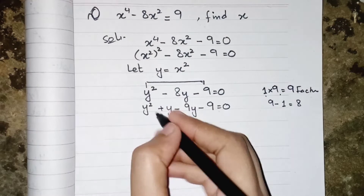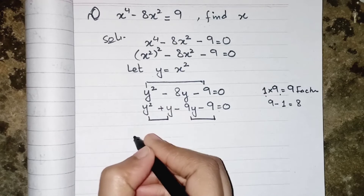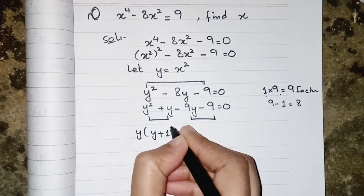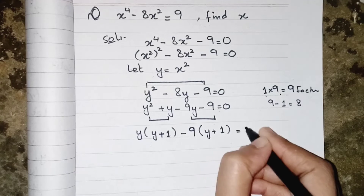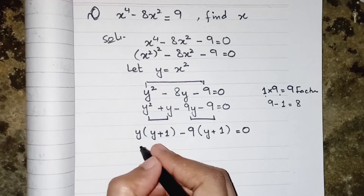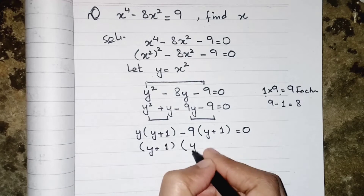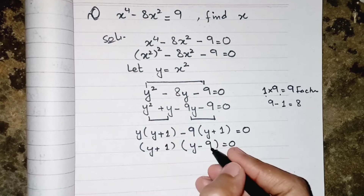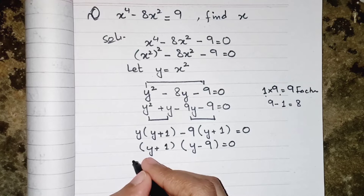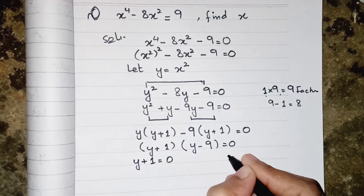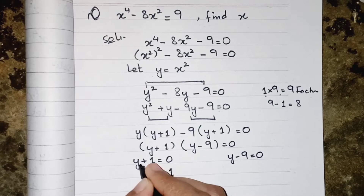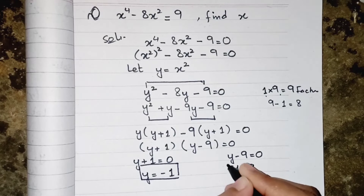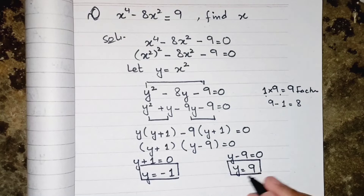Now we take common factors from the first two and last two terms. From the first two terms, y is common, giving y(y + 1). From the last two terms, minus 9 is common, giving −9(y + 1). Both brackets are the same, so we factor as (y + 1)(y − 9) = 0. Setting each factor to zero: y + 1 = 0 gives y = −1, and y − 9 = 0 gives y = 9.